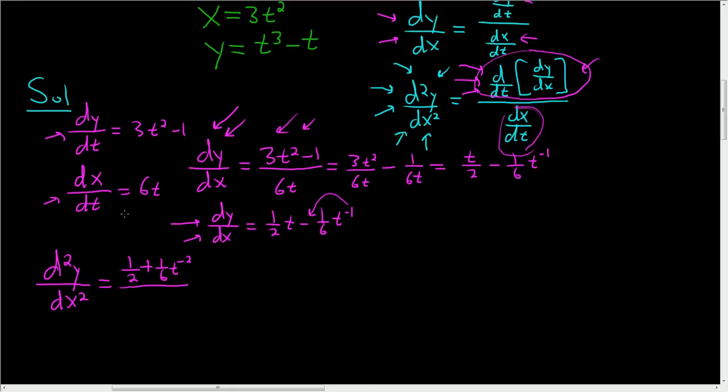And in the denominator, we just have dx/dt. Well, dx/dt, we found out already that's 6t. So this is equal to 1/2 plus 1 over 6t squared, and this is all being divided by 6t.